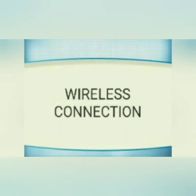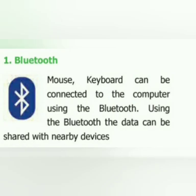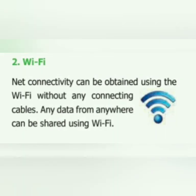Apart from connecting wires, we have another type of connection called wireless connection. The name wireless connection tells us clearly that no wire is required to connect other devices with the computer. Bluetooth: Mouse and keyboard can be connected to the computer with the help of Bluetooth. Using Bluetooth, we can also transfer data to nearby devices. Wi-Fi: Internet connectivity can be obtained using Wi-Fi without any connecting cables. Data from anywhere can also be shared using Wi-Fi.